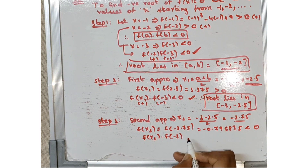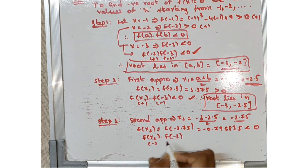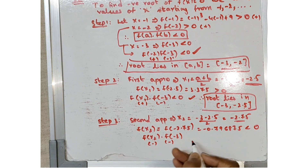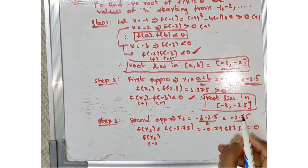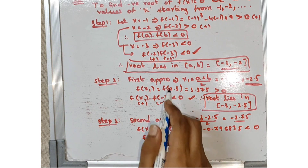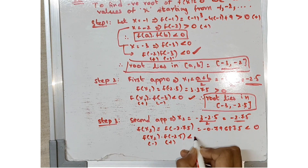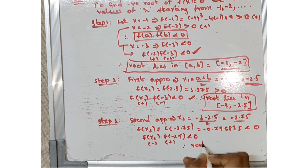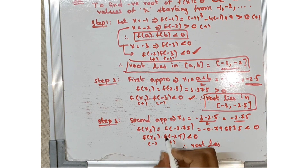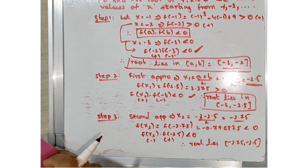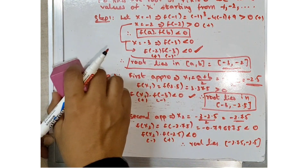Check f(x2) × f(-3): f(x2) is negative and f(-3) is also negative — negative × negative is positive, which is not less than 0. Now check f(-2.5) × f(x2): f(-2.5) is greater than 0 (positive) and f(x2) is negative — negative × positive is negative, so less than 0. Therefore the root lies between x2 = -2.75 and -2.5.